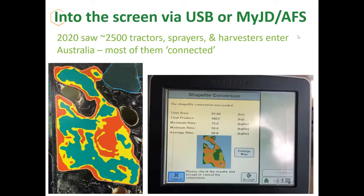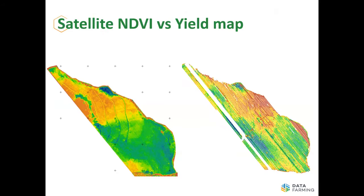About two and a half thousand machines of reasonable size came into the country last year. All of those are connected, which means we can push data from the zone map we create — whatever software you use — and push that over into, say, John Deere. There it is on screen, ready to apply. On Friday you'll hear from all the manufacturers about how to actually do that. When we look at yield mapping, obviously there are a few issues — errors with the moisture meter, blockages, or random driving all over the place. But the satellite imagery often reflects nicely in the yield data, so it is a good tool to help with that.